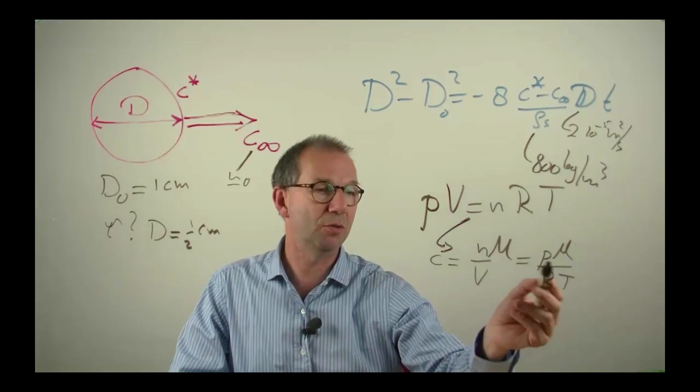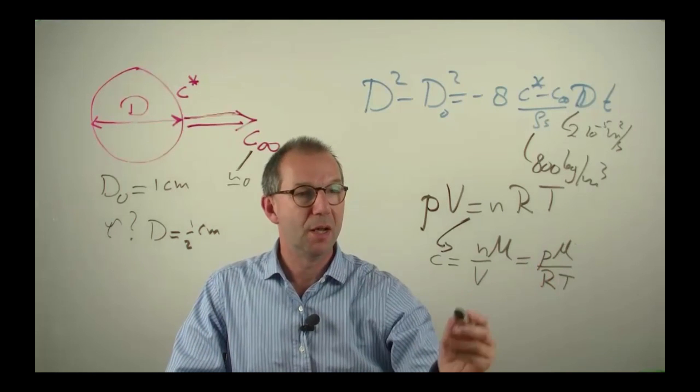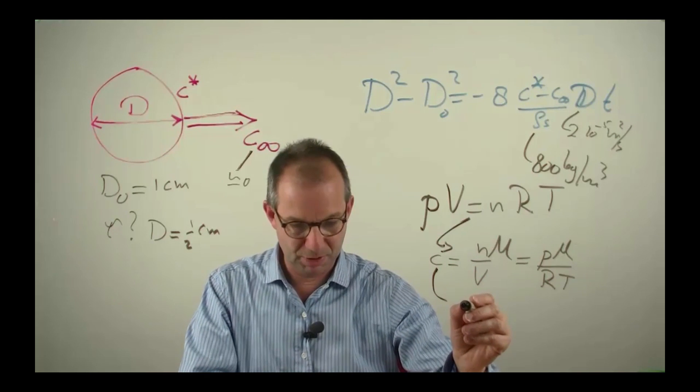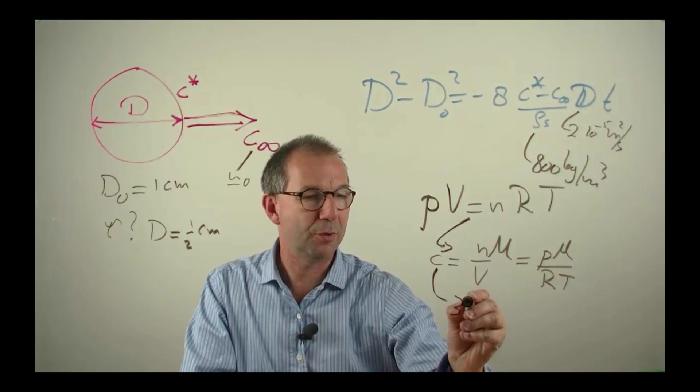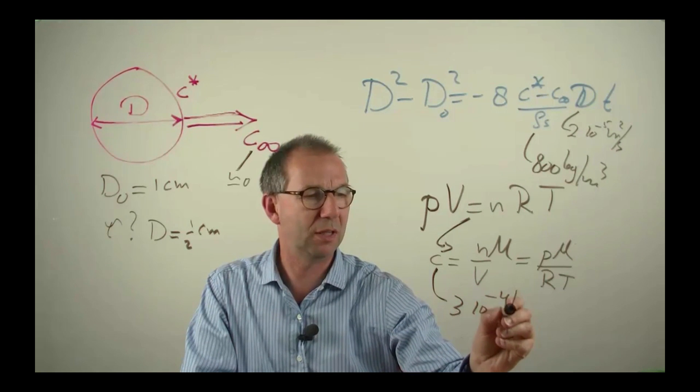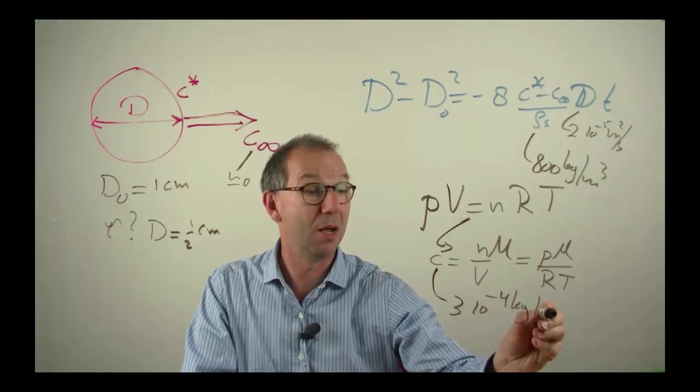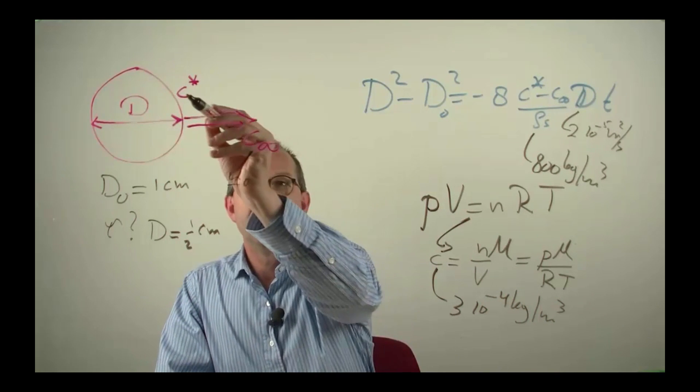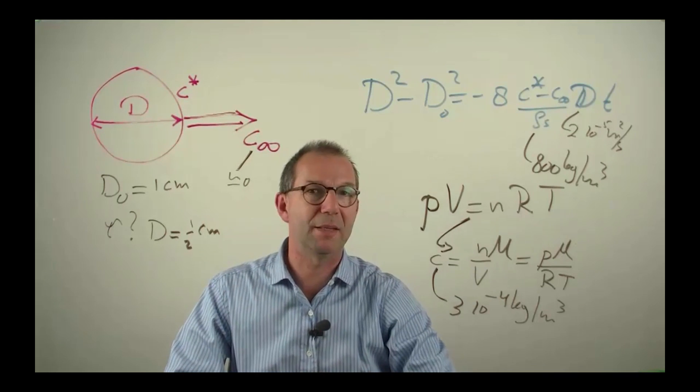R, gas constant, I know. T, room temperature. If I look it up, I get something on the order, let me take a look at my piece of paper, 3·10⁻⁴ kg per cubic meter, pretty low. Therefore slow diffusion is to be expected.